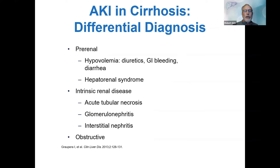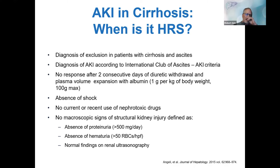I want to highlight something called hepatoadrenal syndrome. Any patient with renal insufficiency or electrolyte abnormalities — you need to be thinking about adrenal status. Take a good history on shock and blood pressure, do a UA for glomerulonephritis, take a good medication history, and get an ultrasound of the kidneys and ureters. HRS is a diagnosis of exclusion, made after two consecutive days of diuretic withdrawal and plasma volume expansion with 1 gram per kilo of body weight up to a maximum of 100 grams.